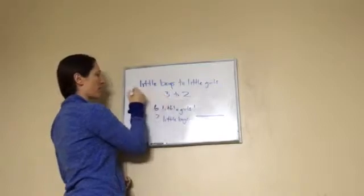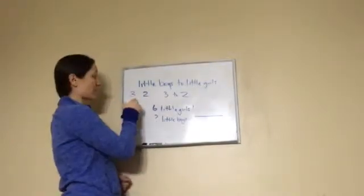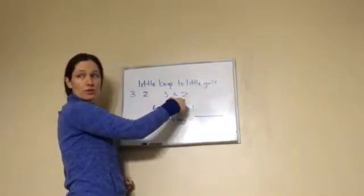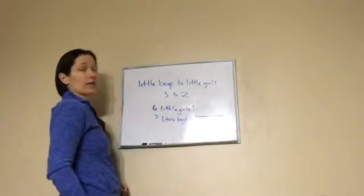Ratio means that every 3 boys, there were 2 girls. Every 3 boys, there were 2 little girls. That's called a ratio. That means there's more boys, right? There's more boys.